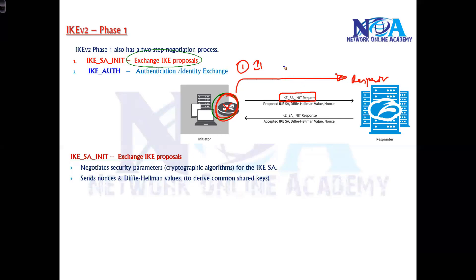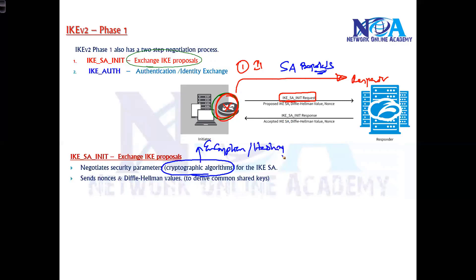This first message contains the security association proposals, which include what cryptographic algorithms will be used — specifically what encryption algorithm and what hashing algorithm will be used. It also includes the Diffie-Hellman group that will be used for secure key exchange and deriving keys on both sides.